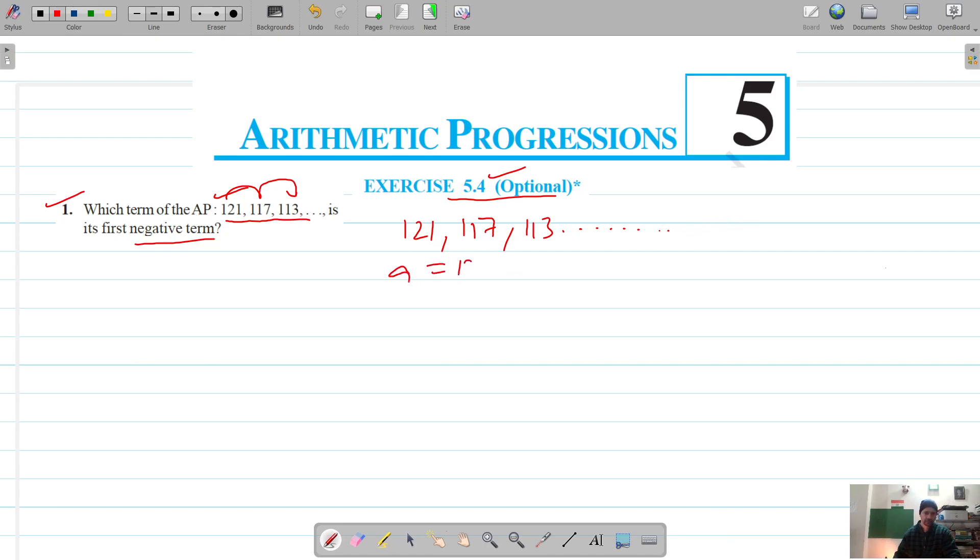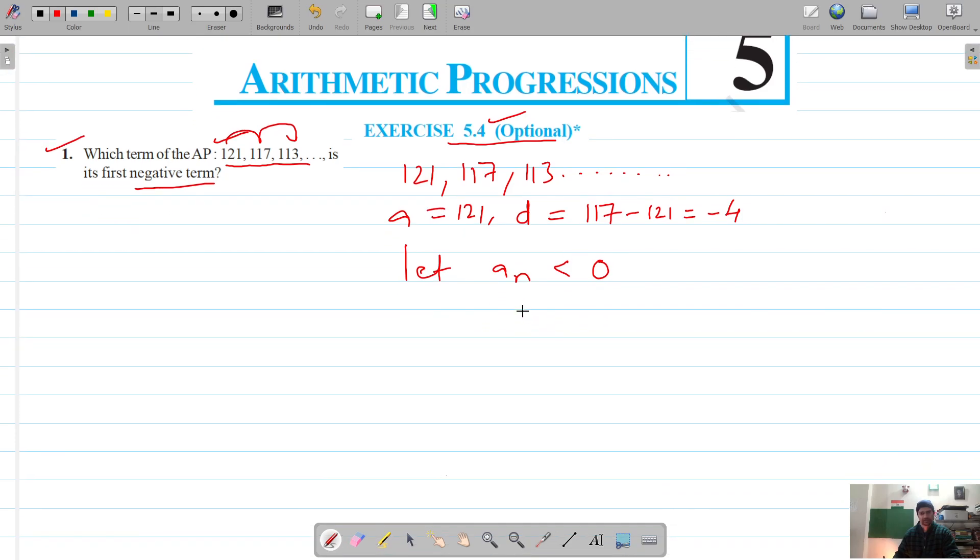The first term of this AP is 121, and d is 117 minus 121, that's negative 4. Let's say the first negative term is the nth term, which is less than 0.